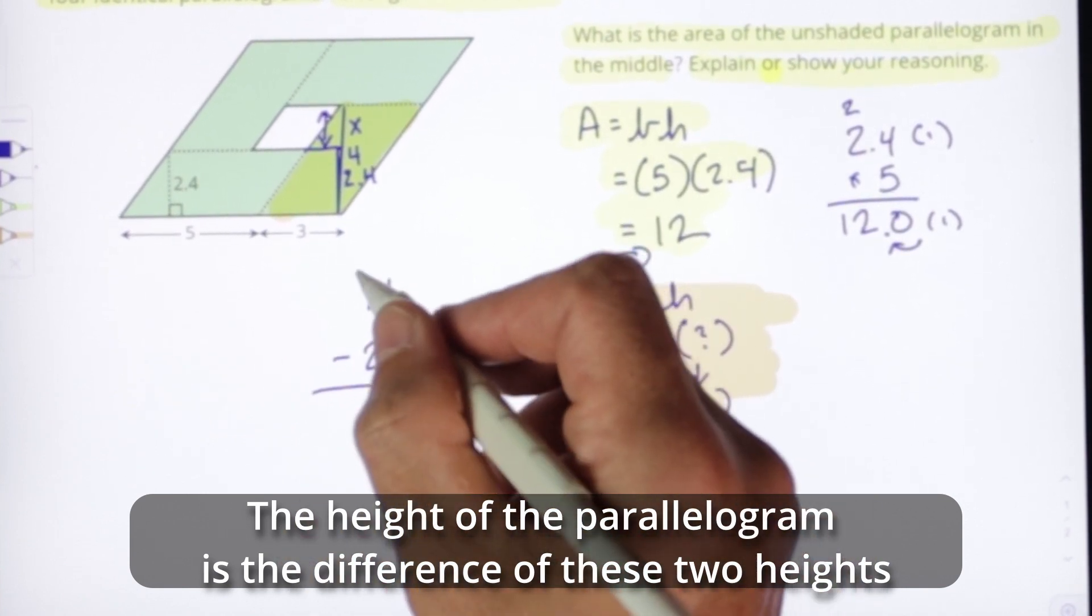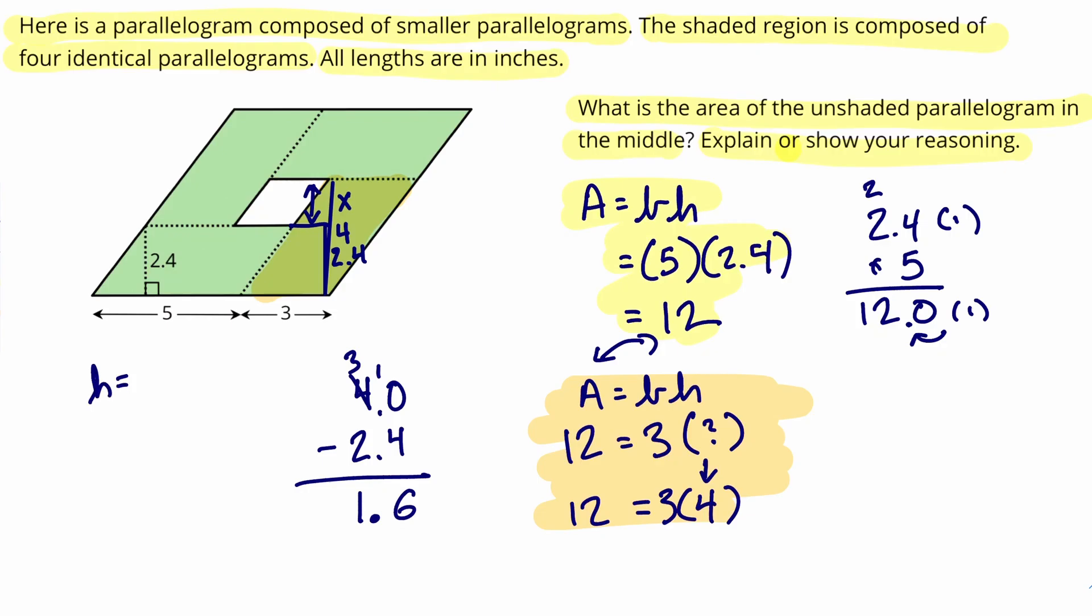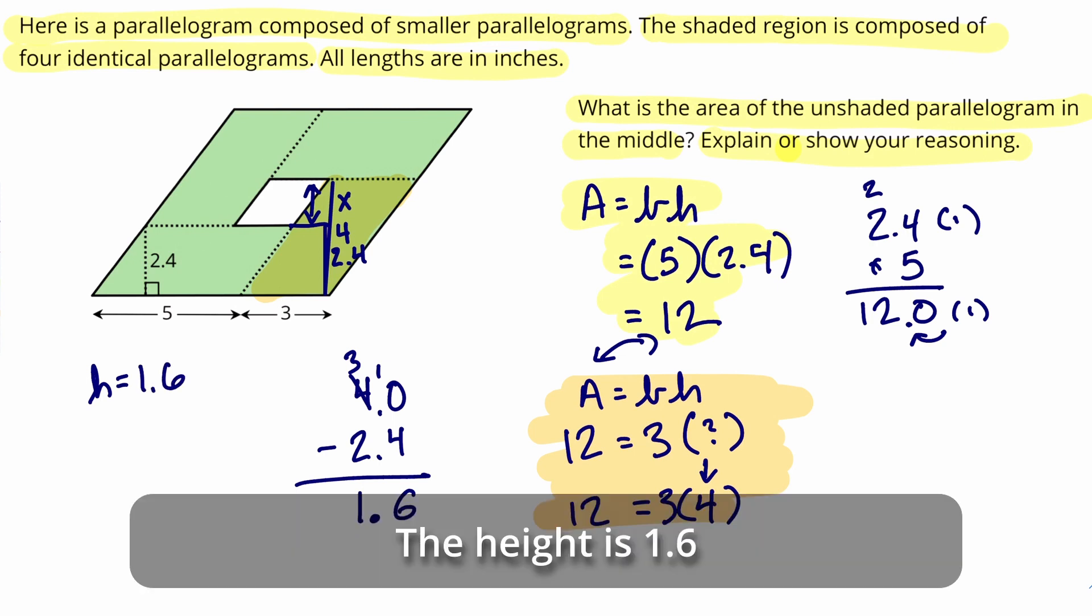Now remember, line up your decimal point and do the subtraction. It's the most important thing. We're going to end up with 1.6. The height of the unshaded parallelogram is 1.6.